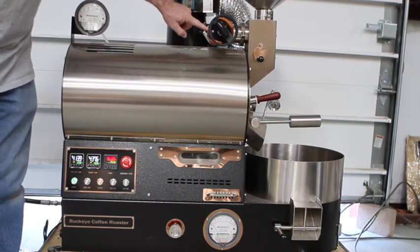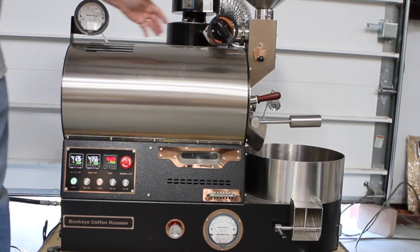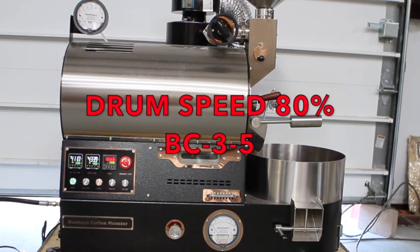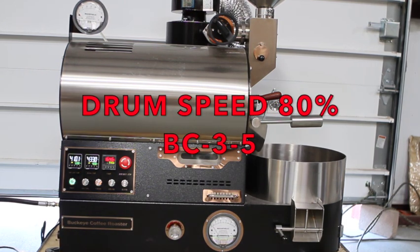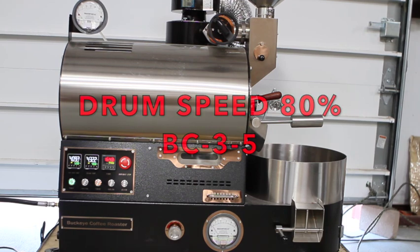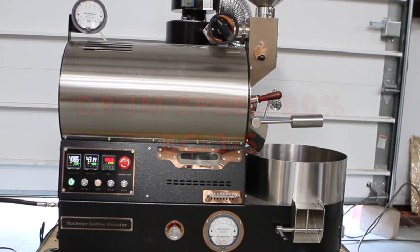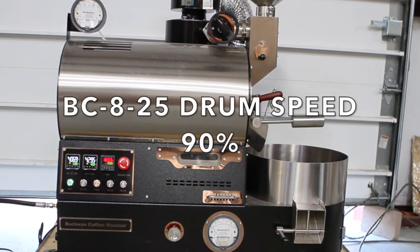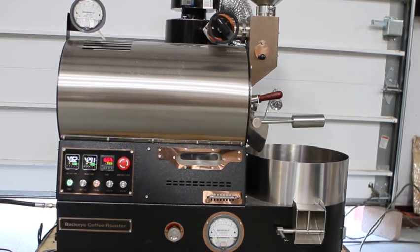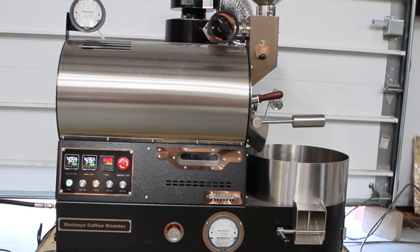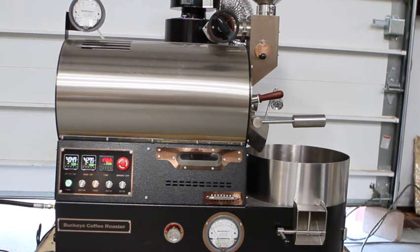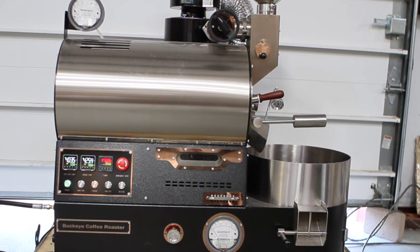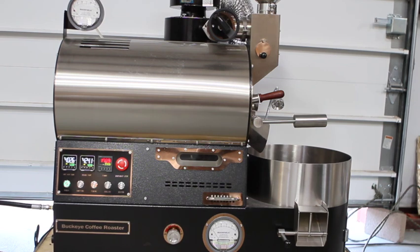Anytime you're roasting you need to make sure that first of all your drum speed is set to about 8 on the new 2024 BC 8 through 25s, it needs to be set at 9. If it's set any lower than that, the beans will not tumble in the drum as effectively.